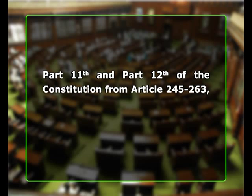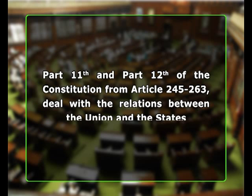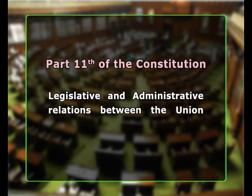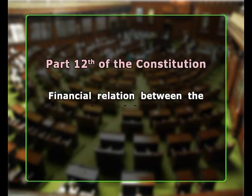The Constitution effects a clear-cut division of powers between the Union of India and the States. Part 11 and Part 12 of the Constitution, from Article 245 to 263, deal with the relations between the Union and the States. Part 11 deals with the legislative and administrative relations, while Part 12 explains the financial relations between the Union and the States.